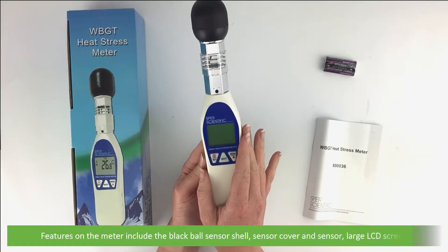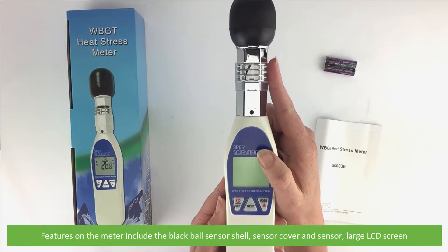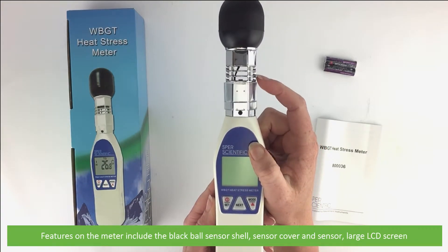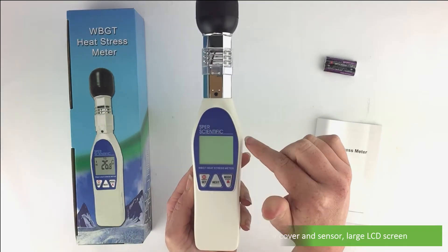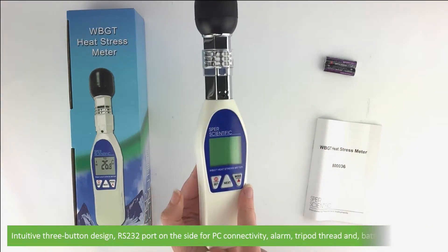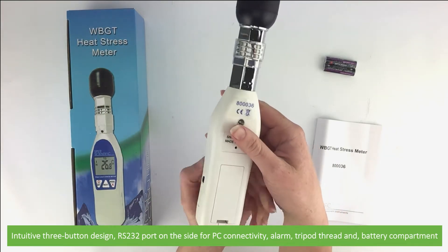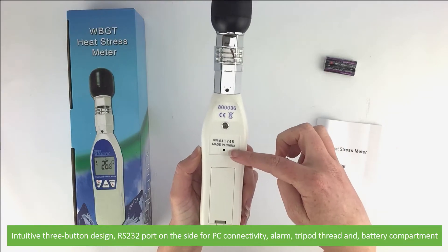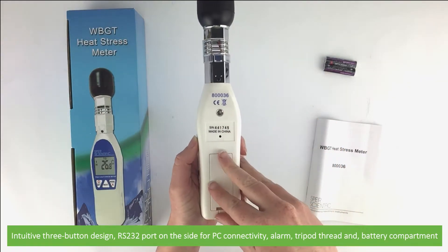Features on the meter include the black ball sensor shell, sensor cover and sensor, large LCD screen, intuitive three button design, RS232 port on the side for PC connectivity, alarm, tripod thread and the battery compartment.